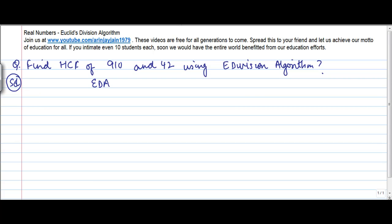Euclid's division algorithm has to be written in the form A equals BQ plus R. The numbers we have to use are 910 and 42. So 910 equals A, 42 equals B. Therefore, 910 equals 42 into Q plus R.